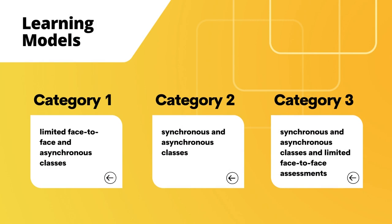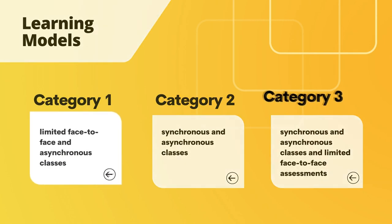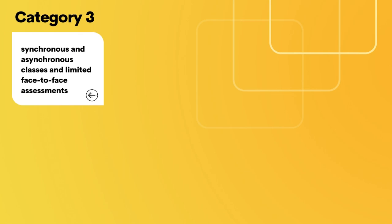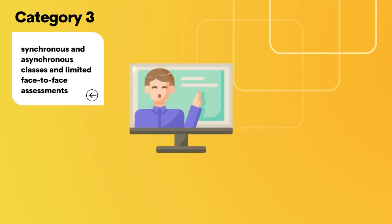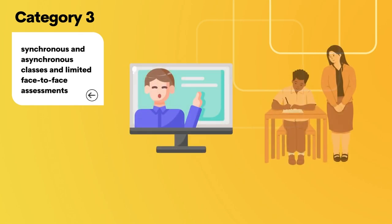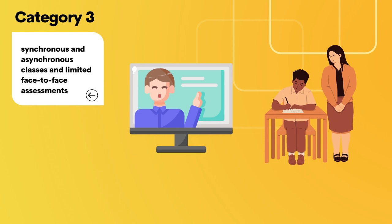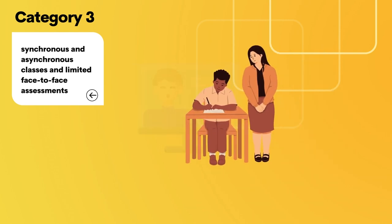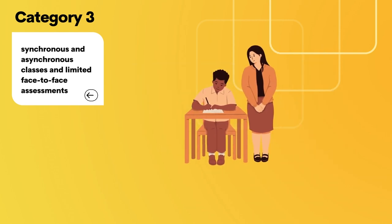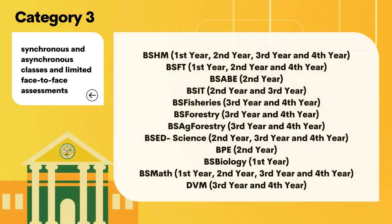Category 3 is a combination of synchronous and asynchronous classes and limited face-to-face assessments. Lectures are done online while assessments are held in the campus. Assessments need to be planned out well, and requests need to be made to the endorsing and approving authorities. Programs under this category are the following.